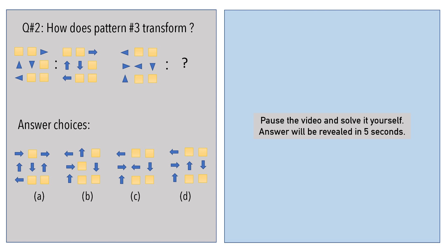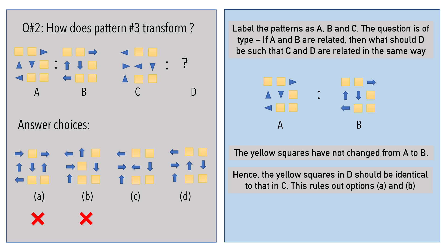Second question: if pattern 1 is related to pattern 2, what is the missing pattern that relates to pattern 3? Pause the video and solve it yourself. From pattern A to pattern B, the yellow squares have not changed in position. Hence, pattern D should have the same number of yellow squares at the same places as pattern C. We can safely rule out options A and B.